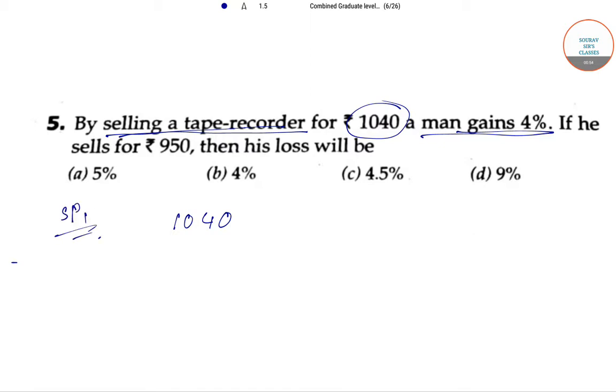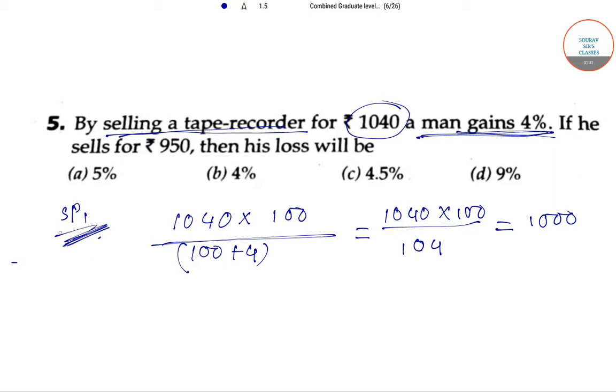And then he gains 4%, which means 1040 times 100 divided by 100 plus 4. So that would be 1040 times 100 divided by 104. Now if we solve it, we will get 1000. So that is the cost price when he is having 4% profit by selling it at 1040.